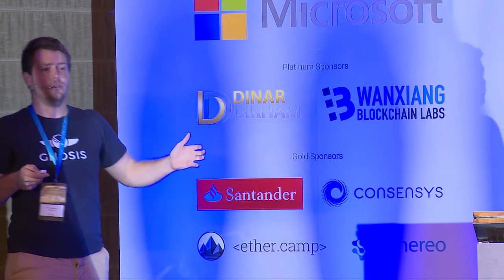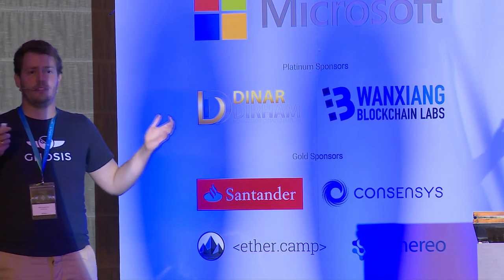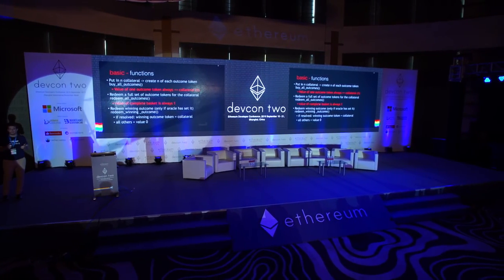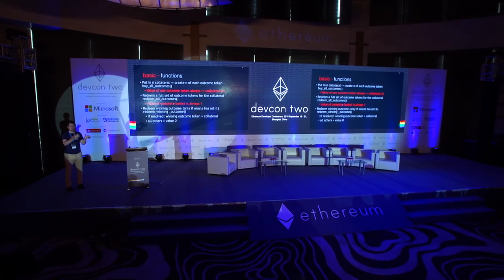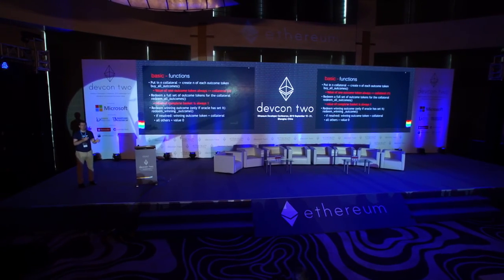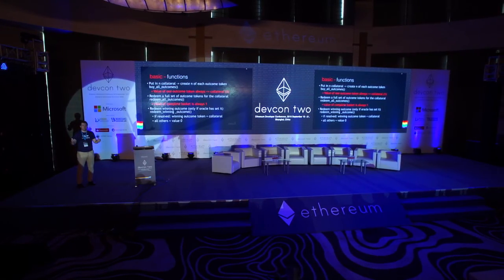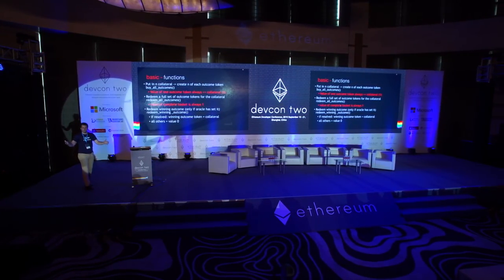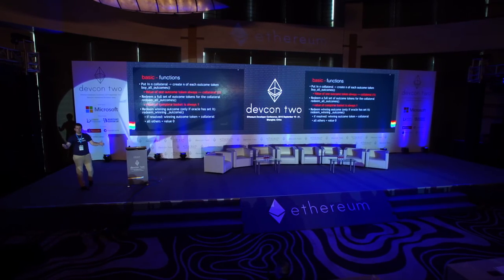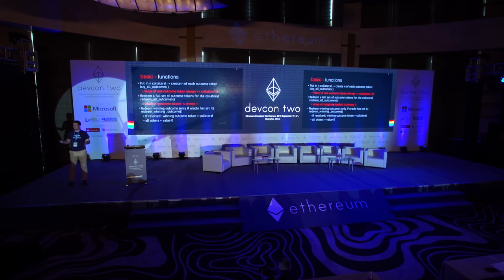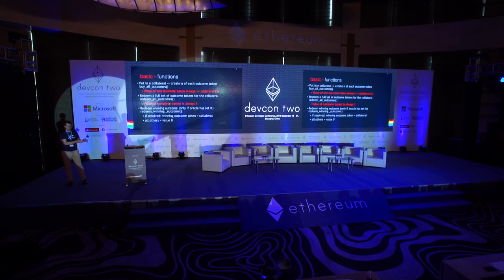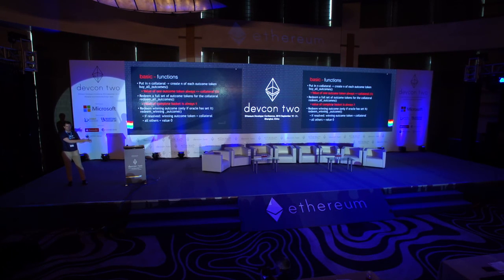Let's look at some properties this brings. There is a simple function: 'buy all outcomes.' You put in one or N collateral tokens and receive N tokens of each outcome. You can also go the other way — take a complete set of outcome tokens and exchange it back for the collateral token. And once the outcome is set, you can exchange the winning outcome token for the collateral.